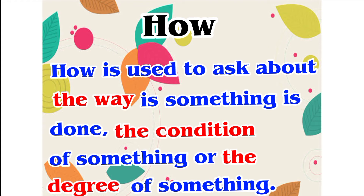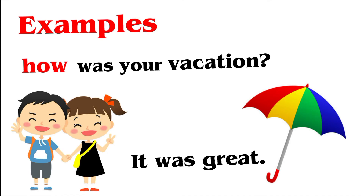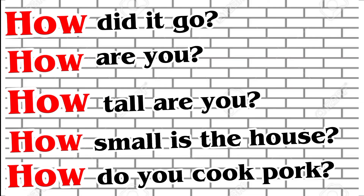Next, let's look at 'how.' How is used to ask about the way something is done, the condition of something, or the degree of something. Example: How was your vacation? It was great! Other examples: How did it go? How are you? How tall are you? How small is the house? How do you cook pork?